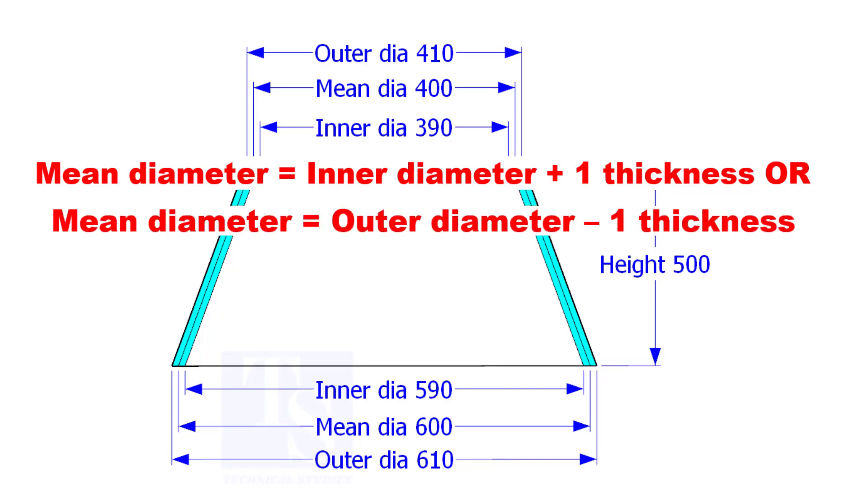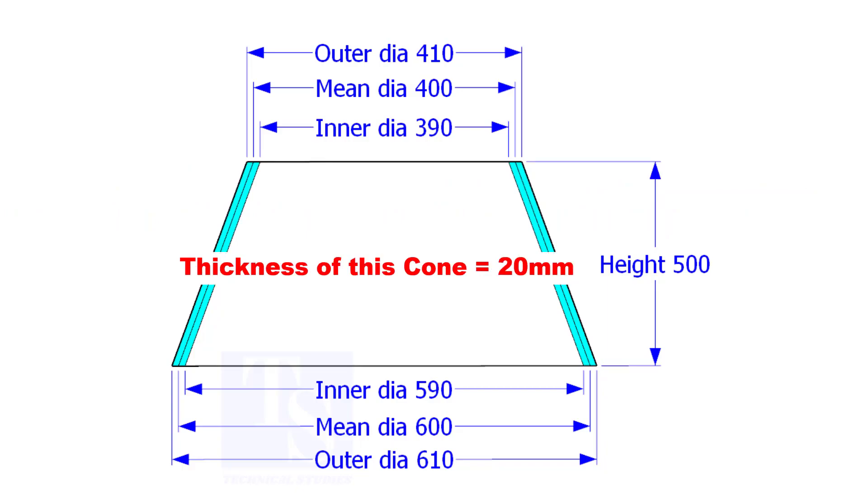suppose the inner diameter is 1000 mm and the thickness of the cone is 20 mm, then the mean diameter shall be 1000 plus 20 equal to 1020 mm. You are supposed to cut the length of the plate, basing the mean diameter of a cone or shell plate.